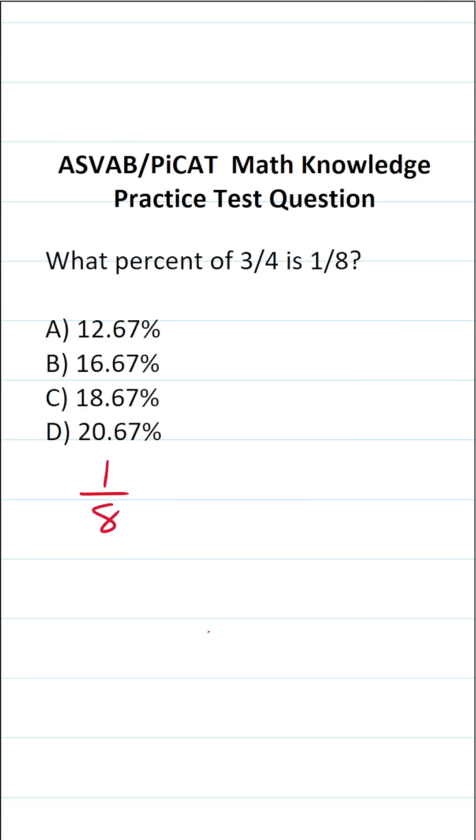One-eighth is, in math, equal. What percent? That percent's unknown, so call it P of three-fourths. And if you want, you could rewrite this to be one-eighth is equal to three-fourths P.